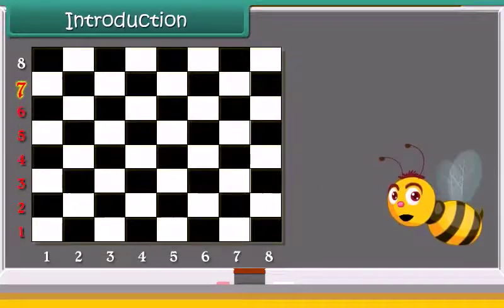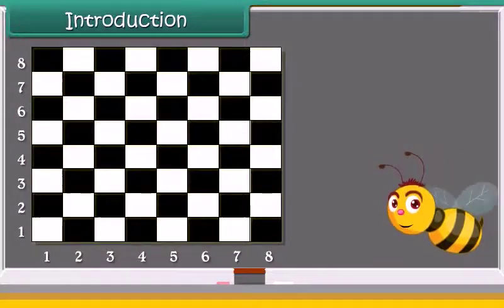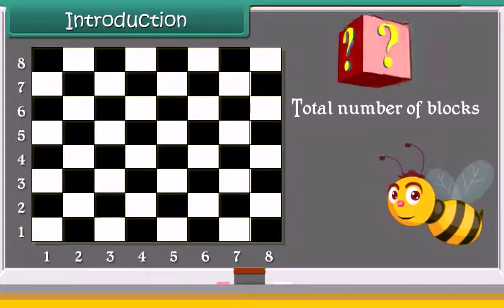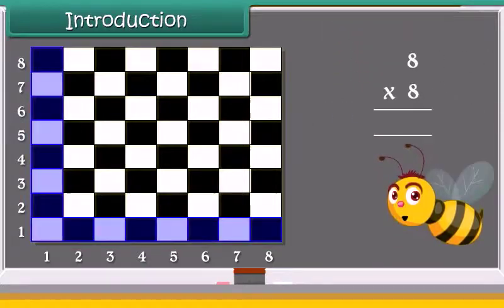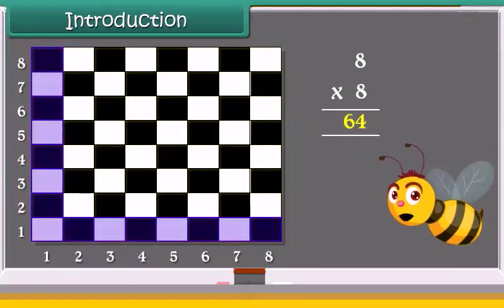Introduction. A chess board has 8 rows and 8 columns. Can you tell the total number of blocks in the board? Yes, we can calculate by multiplying both the numbers. Let's study about multiplication.